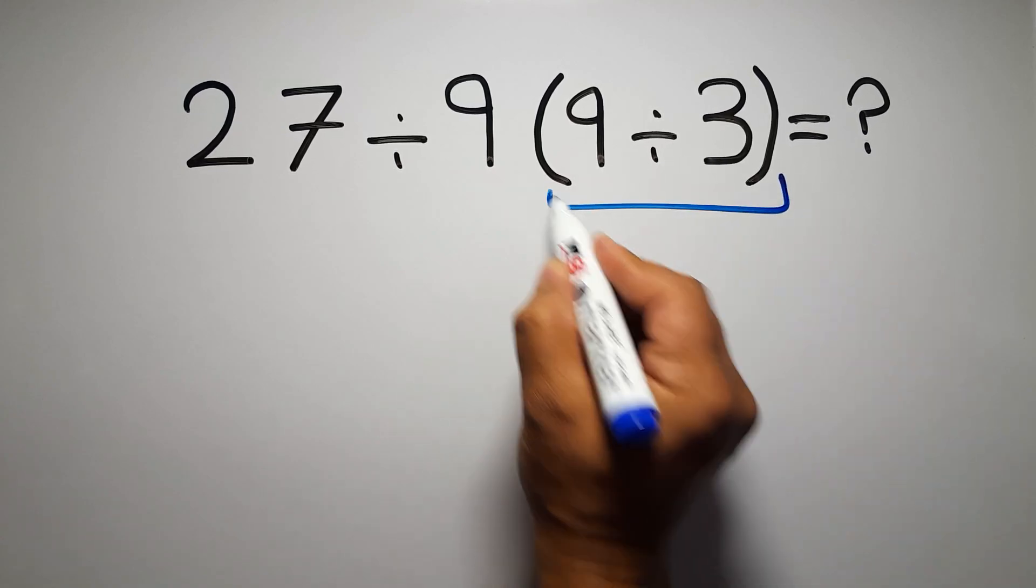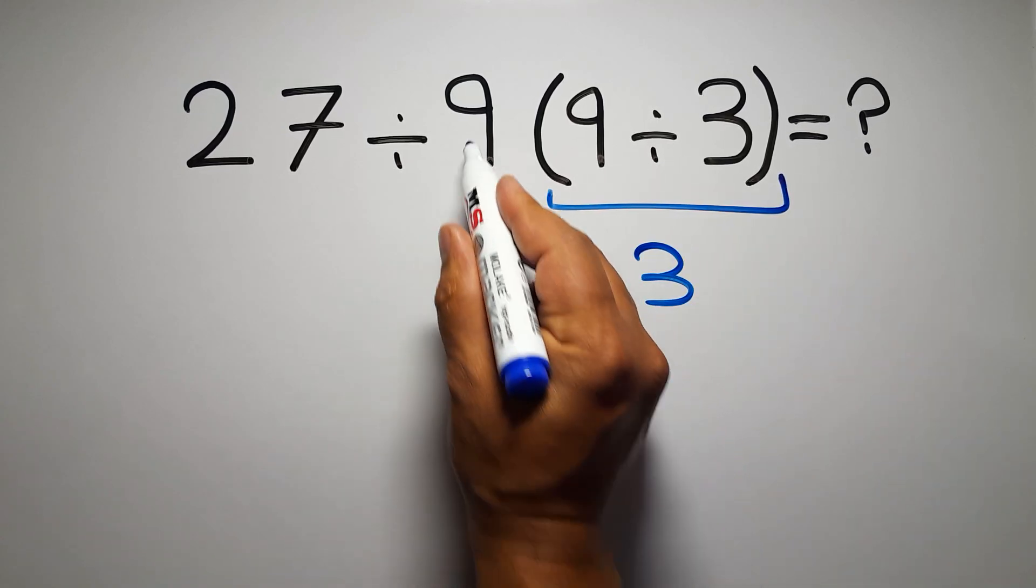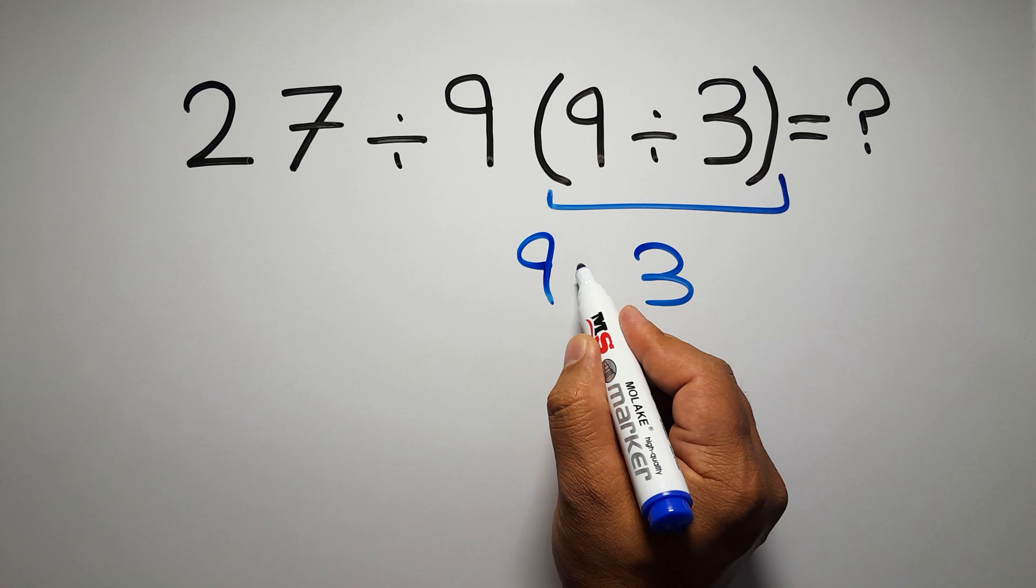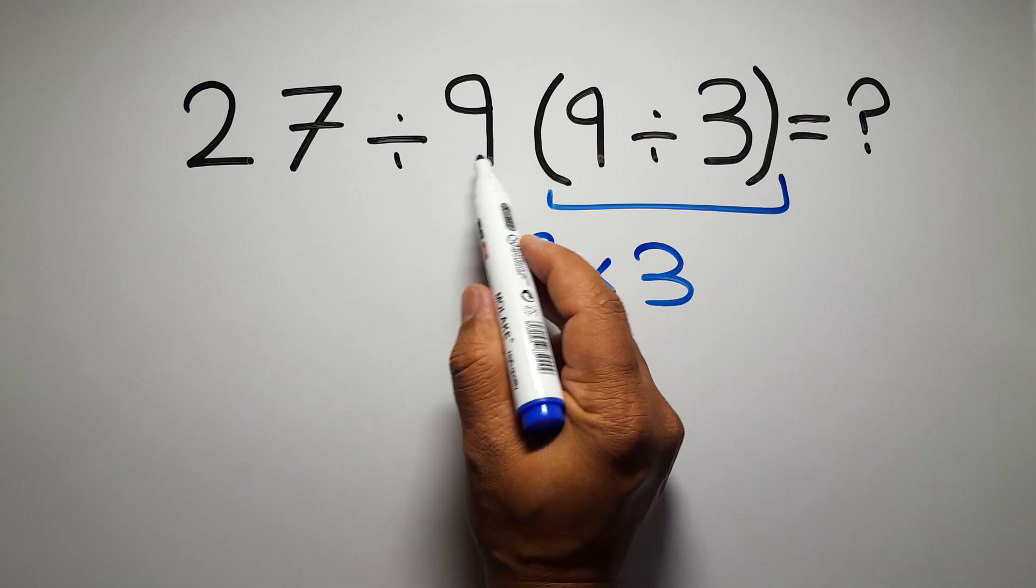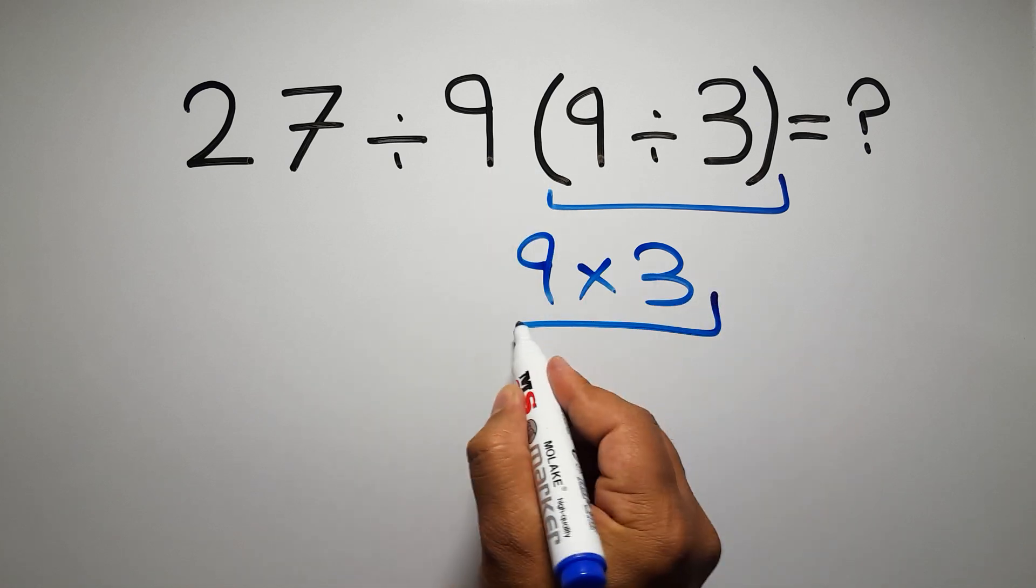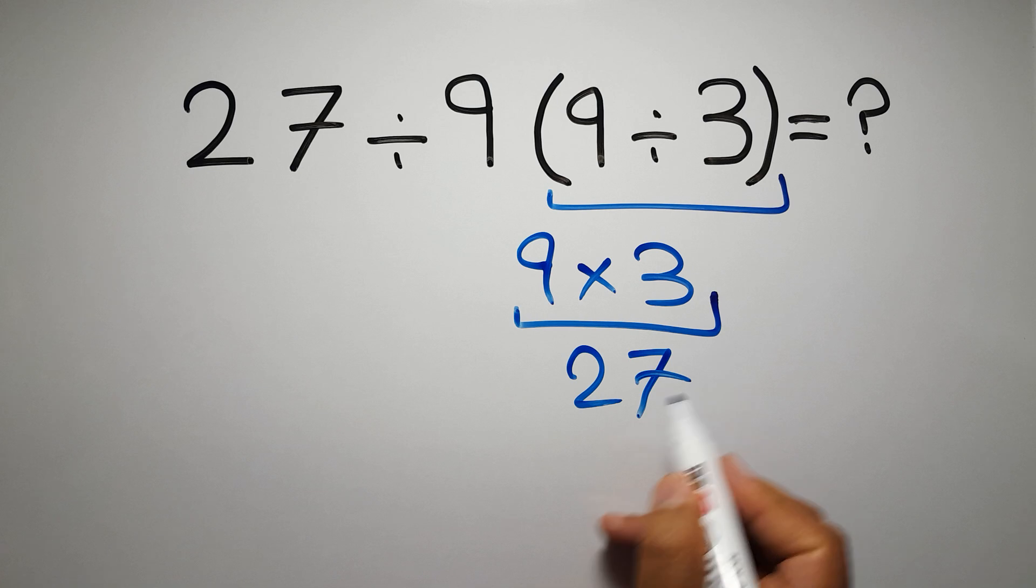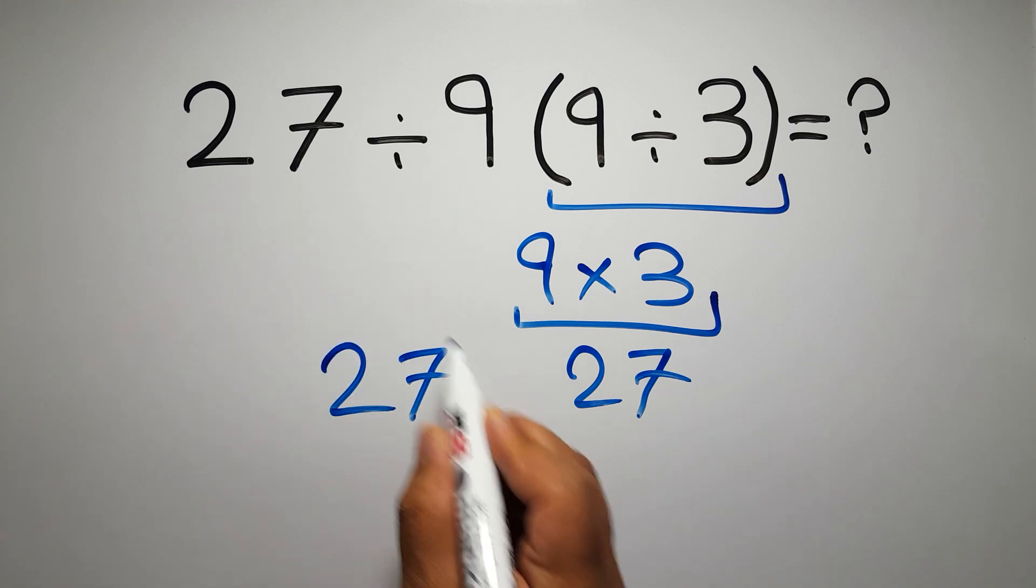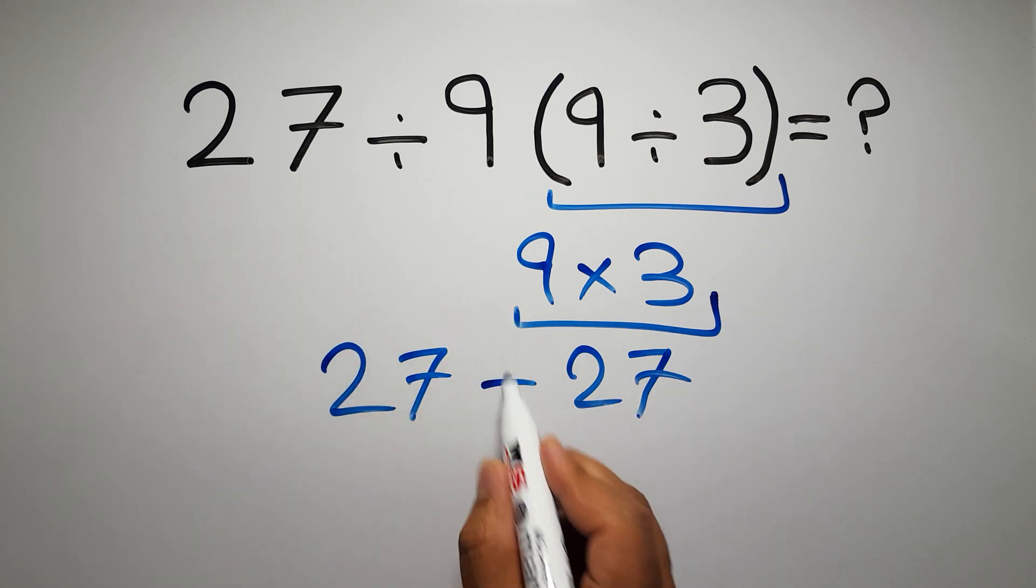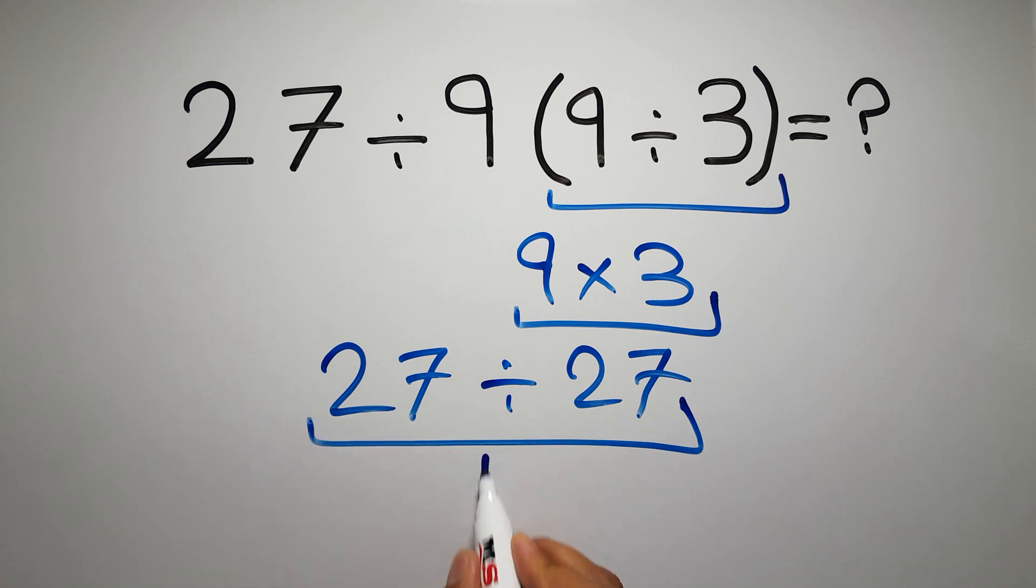9 divided by 3 gives us 3, and 9 times 3 gives us 27, so we have 27 divided by 27, which equals 1, but this answer is not correct.